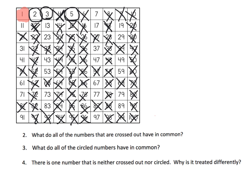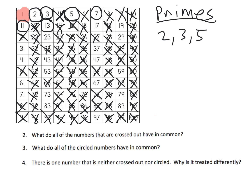Now we're going to circle 7 and skip count every 7, crossing off multiples. Then we have 11 — that's kind of neat because the diagonal 22, 33, 44, 55 are every multiple of 11, so we're done there. Then we circle 13 and cross off every multiple of 13. And lastly, we circle 17 and count off and cross off every multiple of 17.